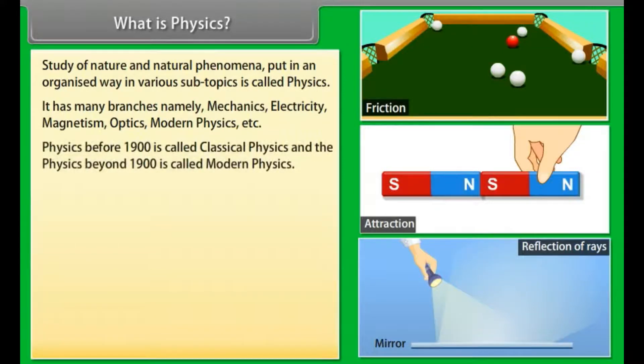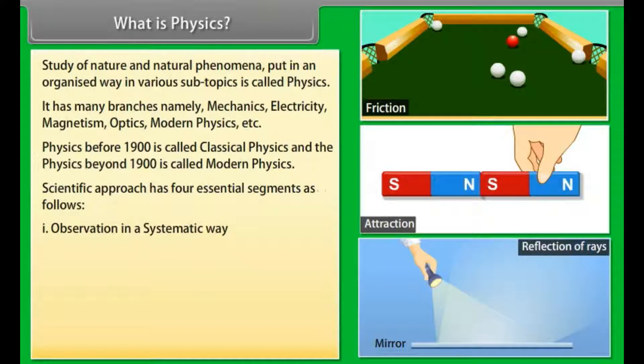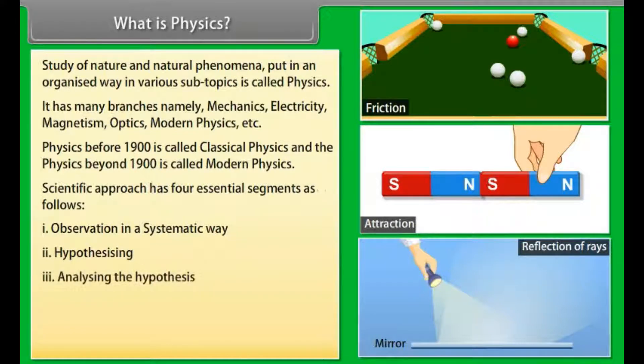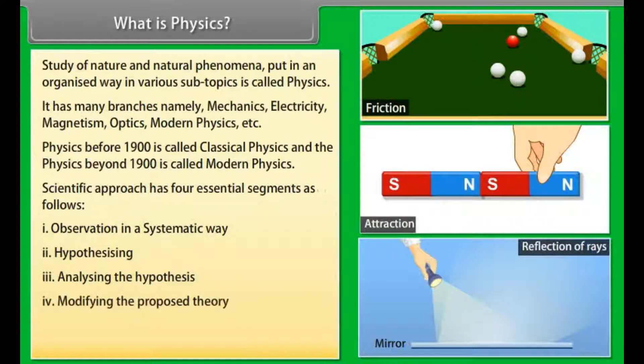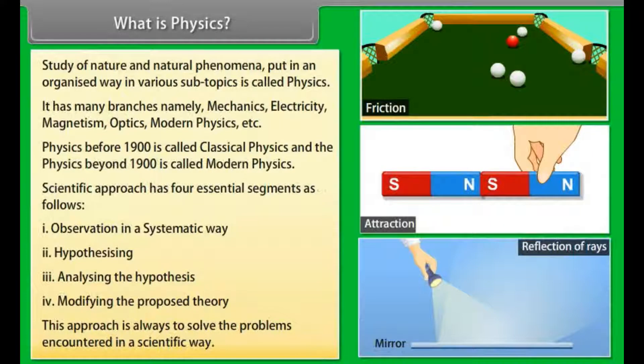Physics before 1900 is called classical physics and physics beyond 1900 is called modern physics. Scientific approach has four essential segments as follows: 1. Observation in a systematic way, 2. Hypothesizing, 3. Analyzing the hypothesis, 4. Modifying the proposed theory. This approach is always to solve the problems encountered in a scientific way.